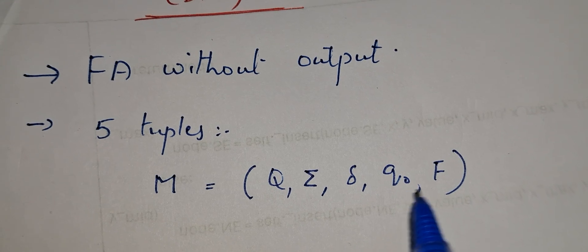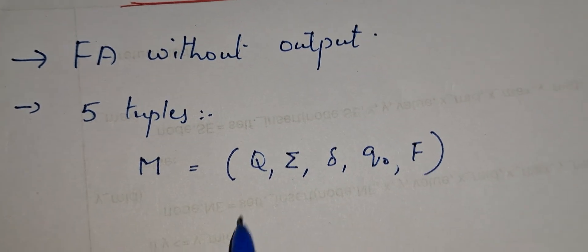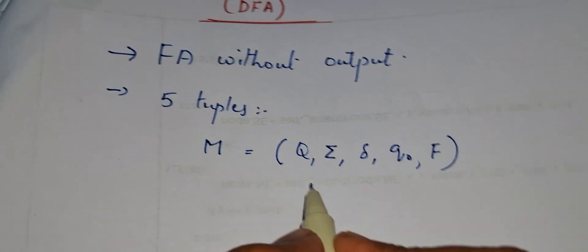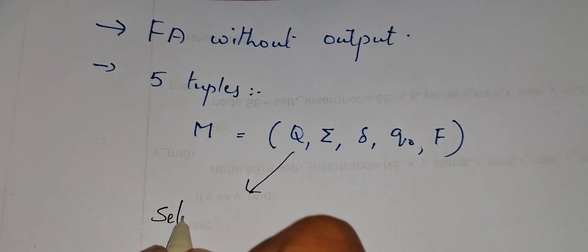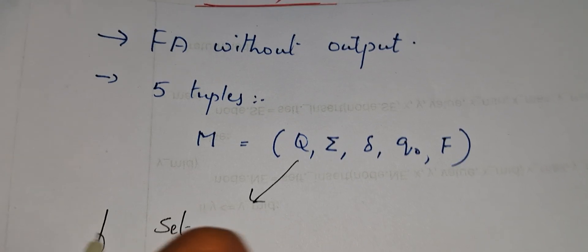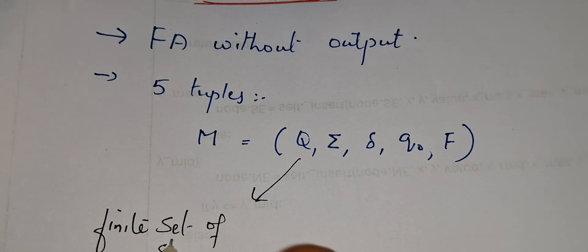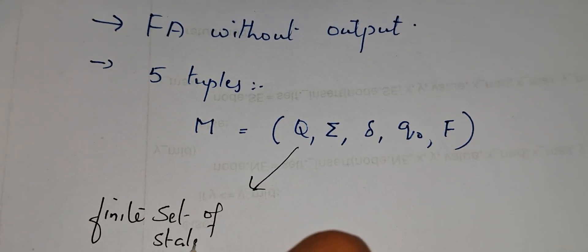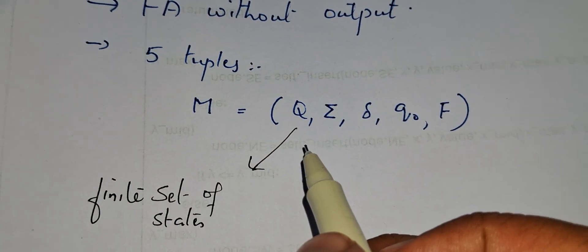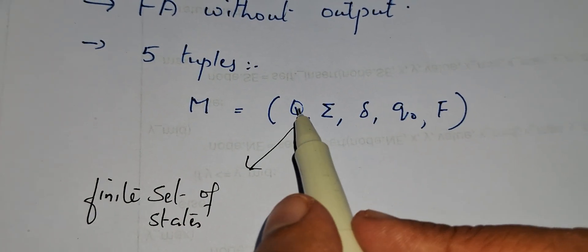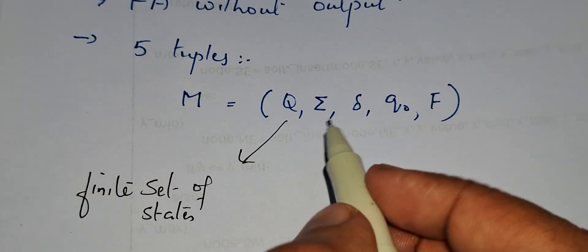So what is Q, what is sigma, what is del, what is Q0, what is F? Q means finite set of states — all the states in a DFA. There will be one or more states.